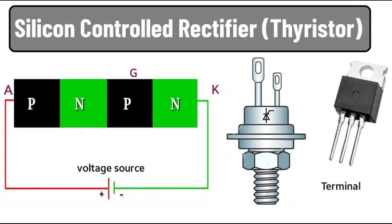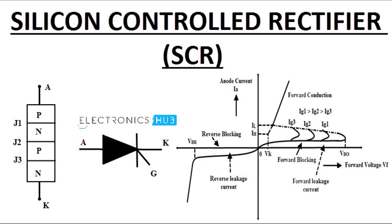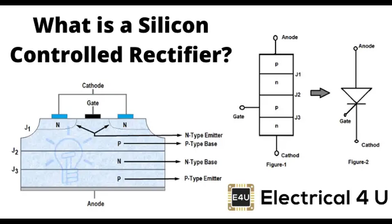Practical considerations: Gate triggering — the gate current should be applied for a short duration (pulse) to trigger the SCR, and then it can be removed. Heat dissipation — proper heat sinking is essential to dissipate the heat generated during conduction and prevent thermal runaway. The symbol of an SCR is depicted with an anode (A), cathode (K), and gate (G). The arrow in the symbol indicates the direction of conventional current flow when the SCR is in the conducting state.